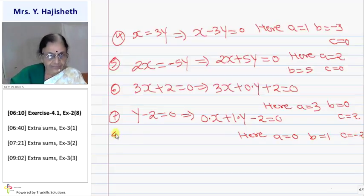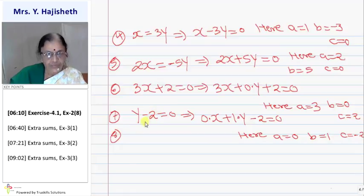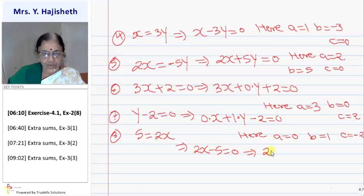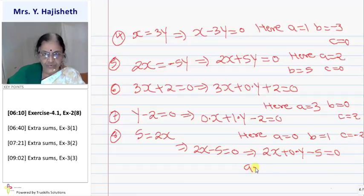Eighth question: five minus two x equals zero. So here a is two (for the x term), b is zero and c is minus five.